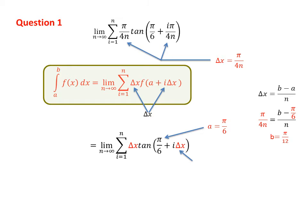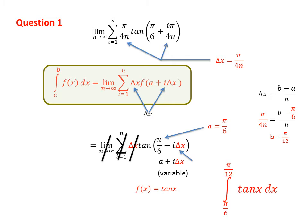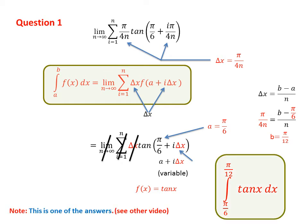The final thing to catch is f(x). What you do is: ignore the limit, ignore the summation symbol, and ignore the outside delta x. Then observe the expression a plus i times delta x — that is your variable place. Whatever you have left is your function. Here we have tangent only, so our function is tangent x. Therefore, our definite integral from this limit is the integral from pi/6 to pi/12 of tangent x dx. Note that this is one of the possible answers — there may be many answers, as shown in my other video.